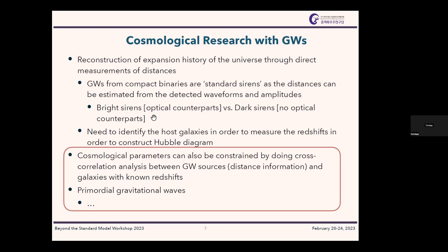There are two types of sources. 'Bright sirens' means we observe both gravitational waves and electromagnetic waves. But the majority of sources are 'dark sirens' — we don't see the electromagnetic radiation and only detect gravitational waves. We need to identify host galaxies in order to measure the redshift and construct the Hubble diagram.